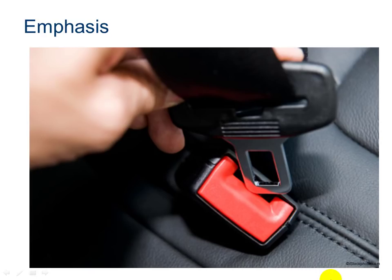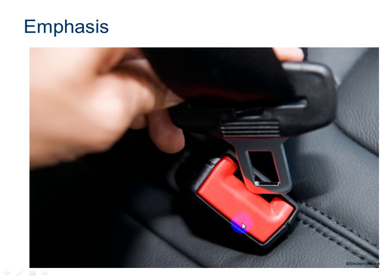Here's an example of emphasis used in the real world. What's the focal point of this device? I believe this part is the focal point. Notice how the rest of the car is black or silver, and they've made this part a bright red to emphasize it. Why would they want to emphasize this particular part? So that people can be safe and use their seat belts, and now they know where to find the place to insert their seat belt against their black leather seats.